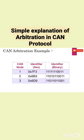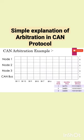Let's take an example. There are 3 nodes in the network and all 3 are ready to transmit their messages. All 3 nodes will start transmitting with their most significant bit, meaning the 11th bit. As all 3 have the 11th bit recessive, the bus state will remain recessive. Even the 10th bit of all the nodes are recessive, so there will not be any problem here.